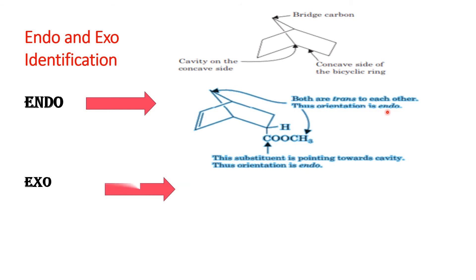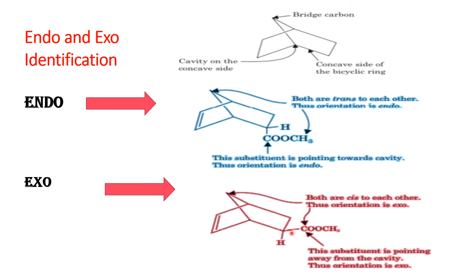Next, identifying the exo isomer. If the substituent which is attached is cis to the bridge carbon atom and it is pointing away from the cavity — this is the cavity, this substituent is pointing away from the cavity and they are cis to each other — then the isomer is the exo isomer. To summarize: if the substituents are trans to each other, the isomer is an endo isomer; if the substituents are cis to the bridge carbon atom, it is the exo isomer. Generally, we call endo as trans and exo as cis.